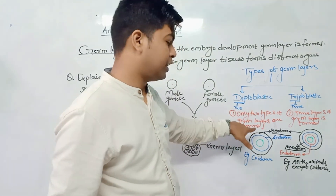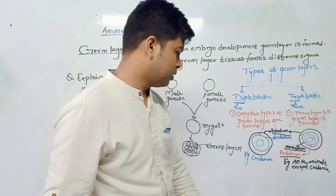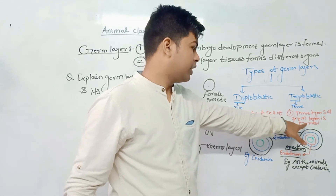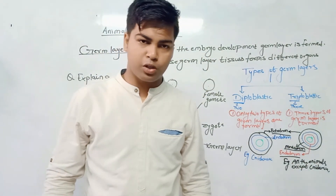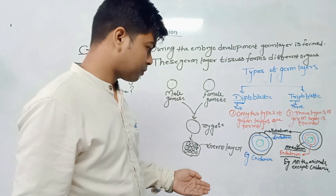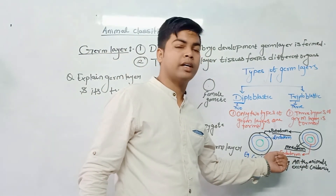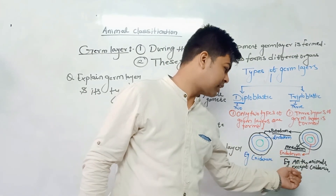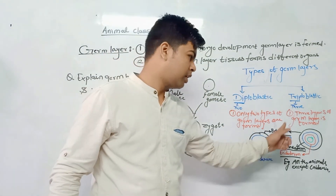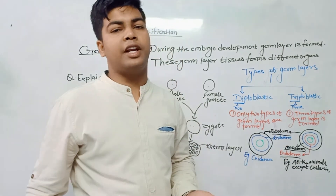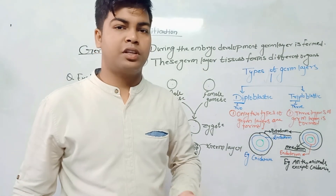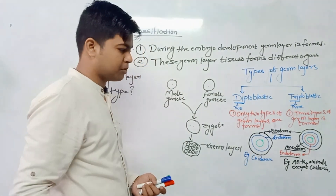Diploblastic has two germ layers: ectoderm and endoderm. Example is Cnidaria. Triploblastic has three germ layers: ectoderm, mesoderm, and endoderm. Meso means middle, so mesoderm is the middle layer, and endoderm is the inside layer. All animal groups except Cnidaria are triploblastic in origin, because Cnidaria is a diploblastic animal.